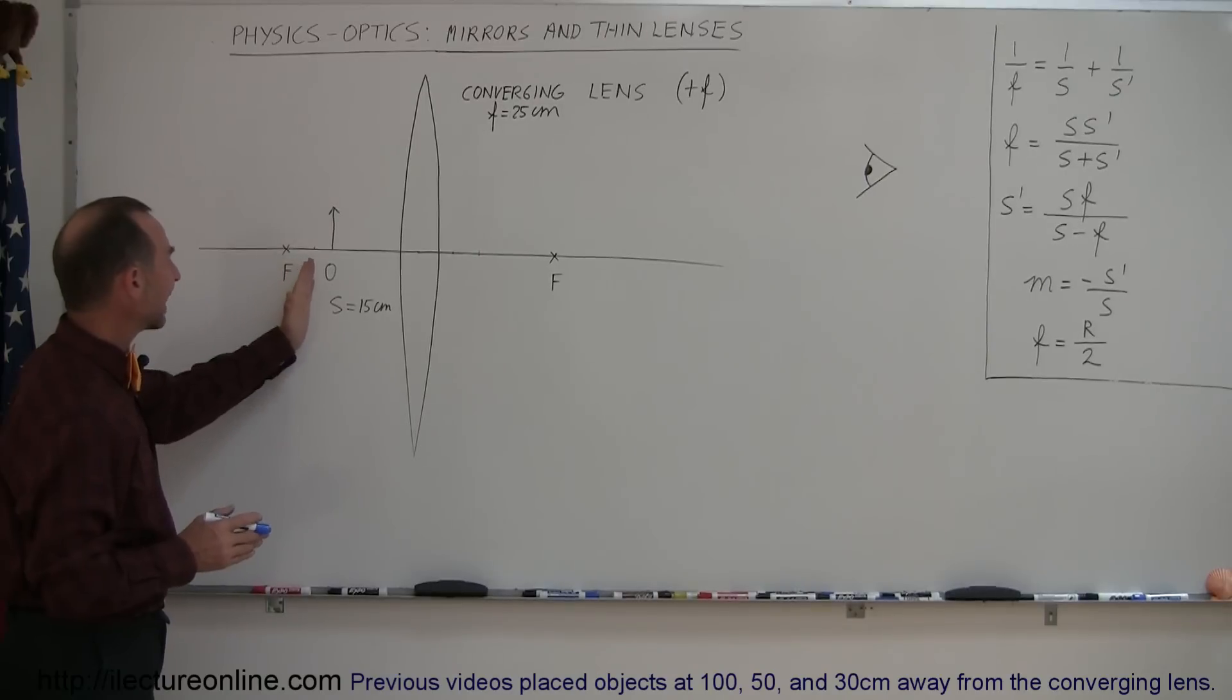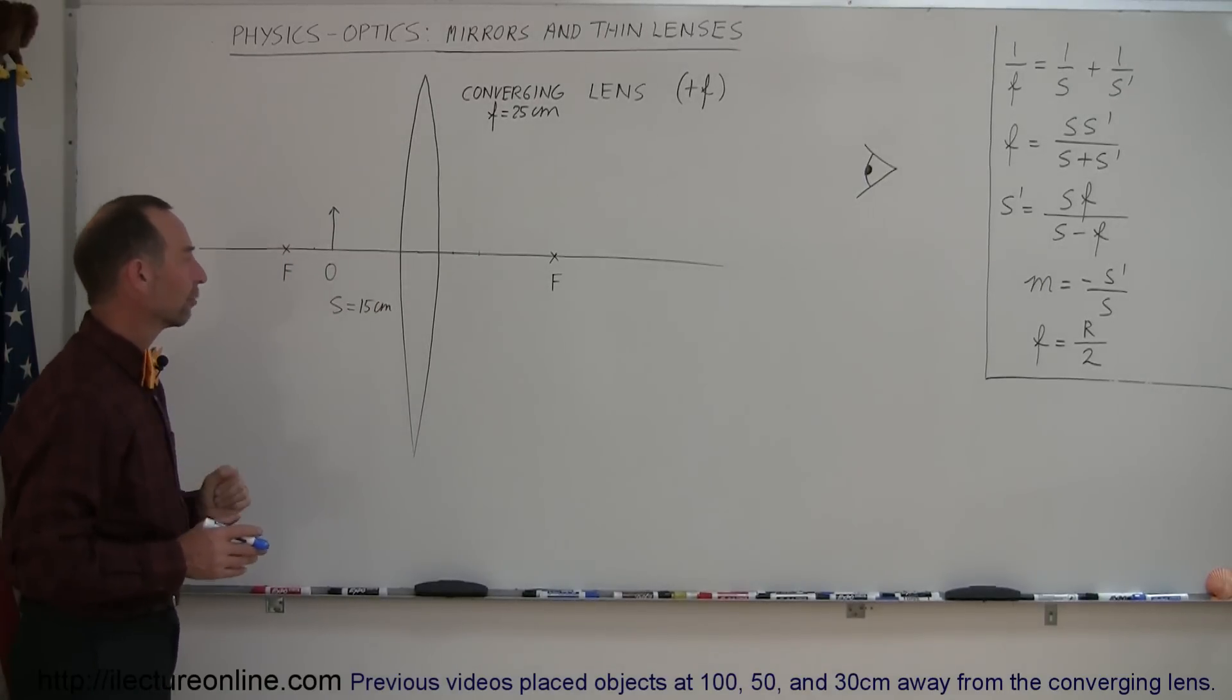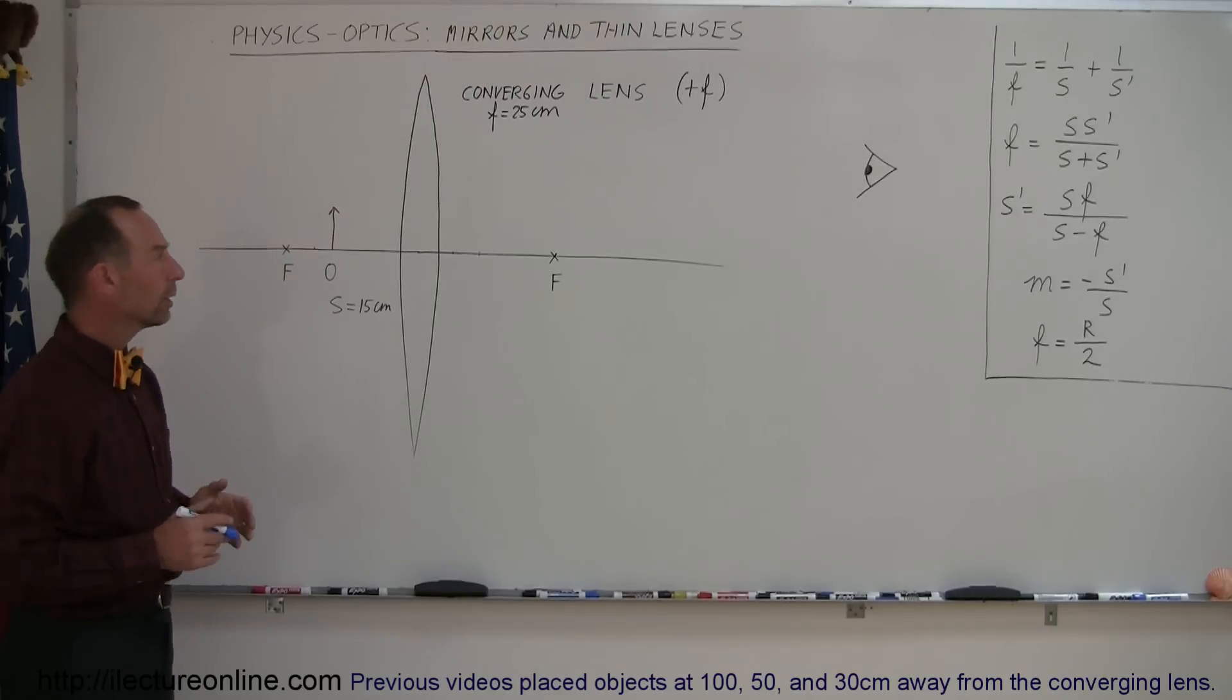We have now placed our object inside the focal point, meaning closer to the lens than the position of the focal point. And so where will the image appear now? Well, let's try our ray diagram.